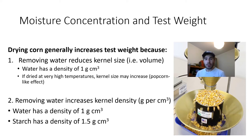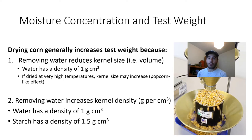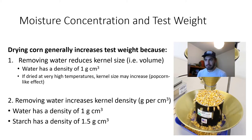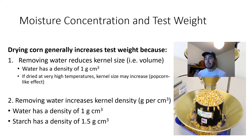Drying corn increases test weight through two mechanisms. First, when water evaporates, every gram of water that evaporates reduces volume by one cubic centimeter because the density of water is one gram per cubic centimeter. So generally, as corn grain dries, it shrinks. However, if corn is dried at very high temperatures very quickly, this reduction in kernel volume may not occur — you might get a popcorn-like effect where the kernel actually increases in size as it's losing water.